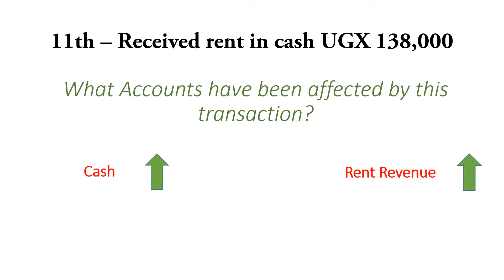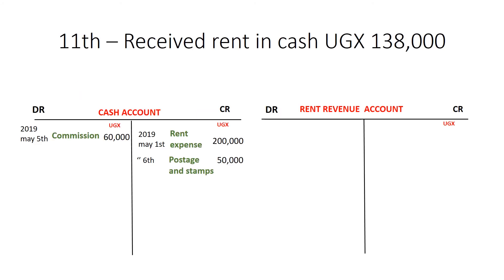To complete the double entry, we draw up the cash account. Because cash increased, we debit it by 138,000 Uganda shillings. The other item that caused this increase is rent revenue, and it happened on the 11th. We complete our double entry in the rent revenue account by crediting the rent revenue account by 138,000. The other item affected is cash, and this took place on May 11th, 2019.